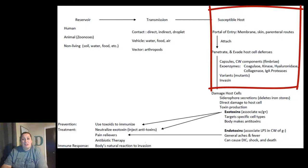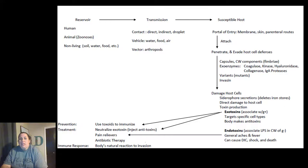There can be different variants or mutations of microorganisms — some might be susceptible to certain medications while others aren't; some might get caught by your immune system while others don't. The more of them there are, the stronger their invasion. Ultimately, their goal is to damage your cells and cause some sort of damage inside of you.